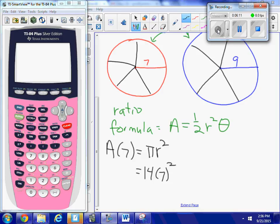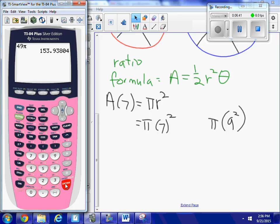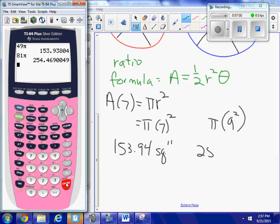And correspondingly for the large pizza, it would be equal to π times 9². That's the area of the whole vegetarian pizza. So let's do a little bit of calculation here. 7² is 49, so 49π. This pizza right here is 153.94 square inches. And the other one is 81π, which is 254.47 square inches.